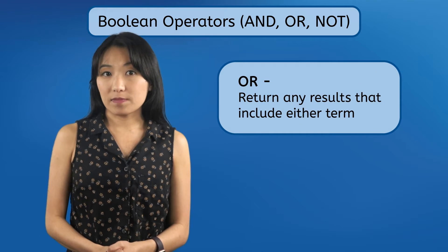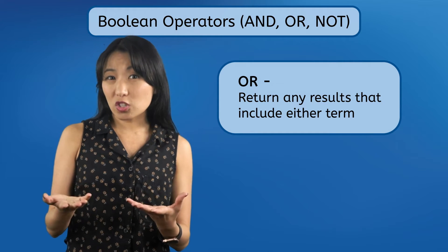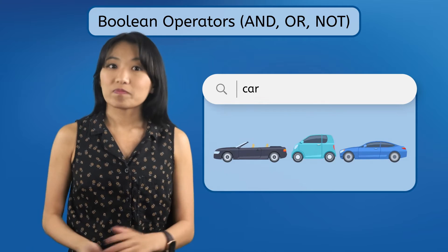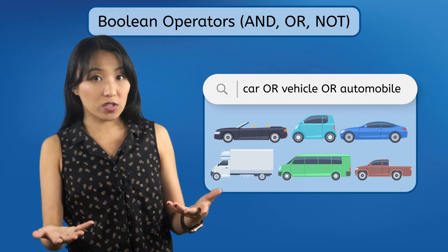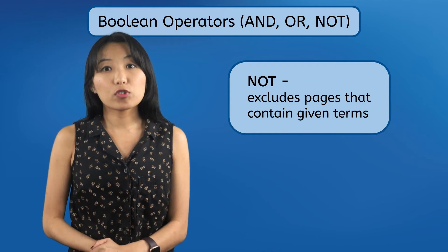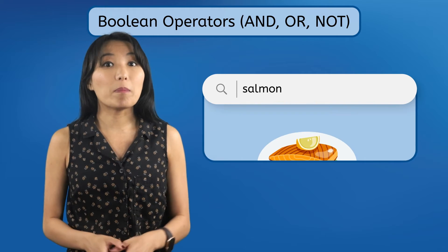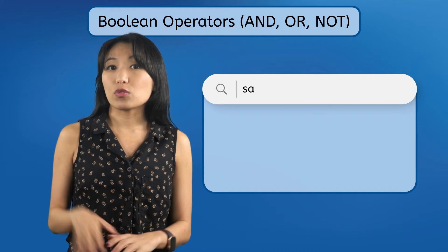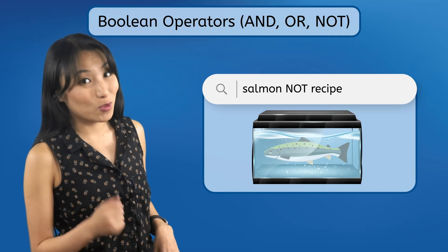The OR operator does the opposite — it expands your search to give you any results that have either term in them. This is useful if you're not sure which term a relevant page might use. If you search for the word CAR, you'll only get pages that use the word CAR. If you search CAR OR VEHICLE OR AUTOMOBILE, this will expand your search to any page that uses any of those words. With NOT, you can intentionally exclude results if they contain a certain term. This is useful if your searches keep returning irrelevant results for the same reason. Like, a search for SALMON might return a bunch of recipe pages, when what you wanted was a pet store that sells pet salmon. By refining your search to SALMON NOT recipe, any page with the word RECIPE would be thrown out, and you would be one step closer to owning a new pet.